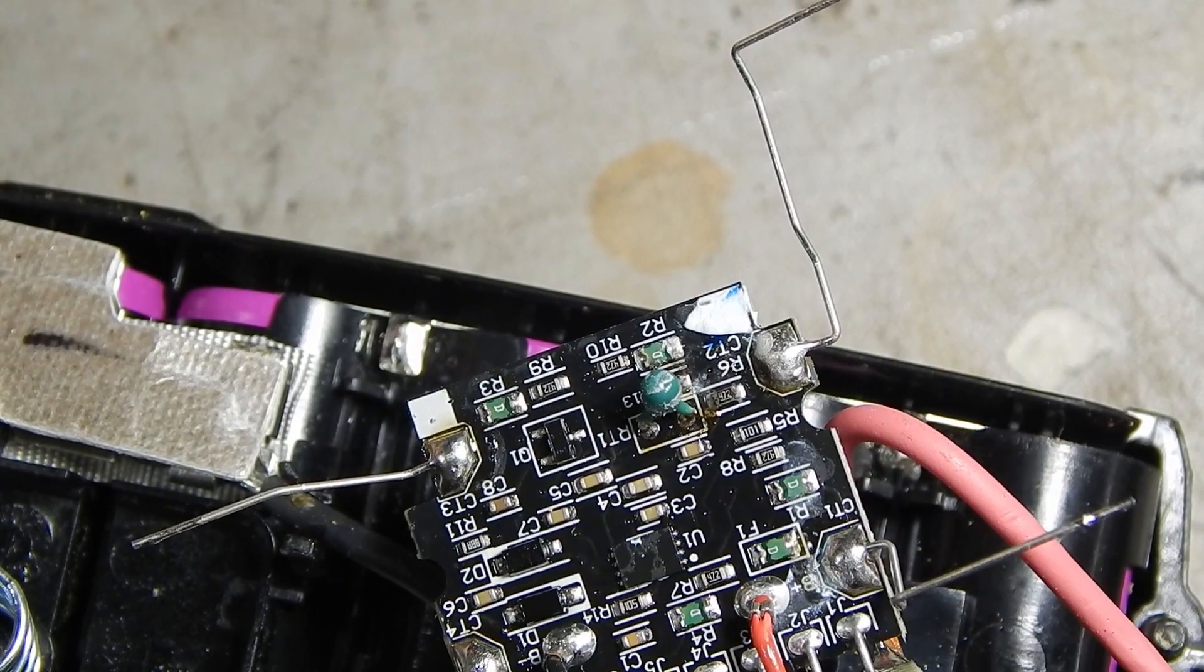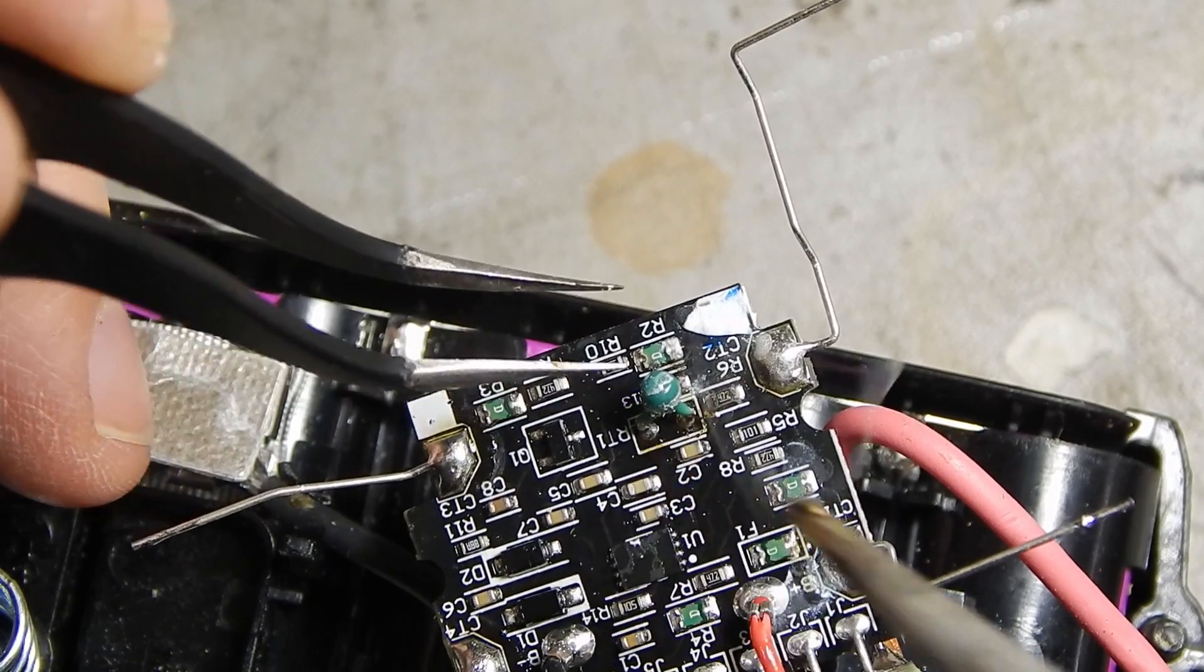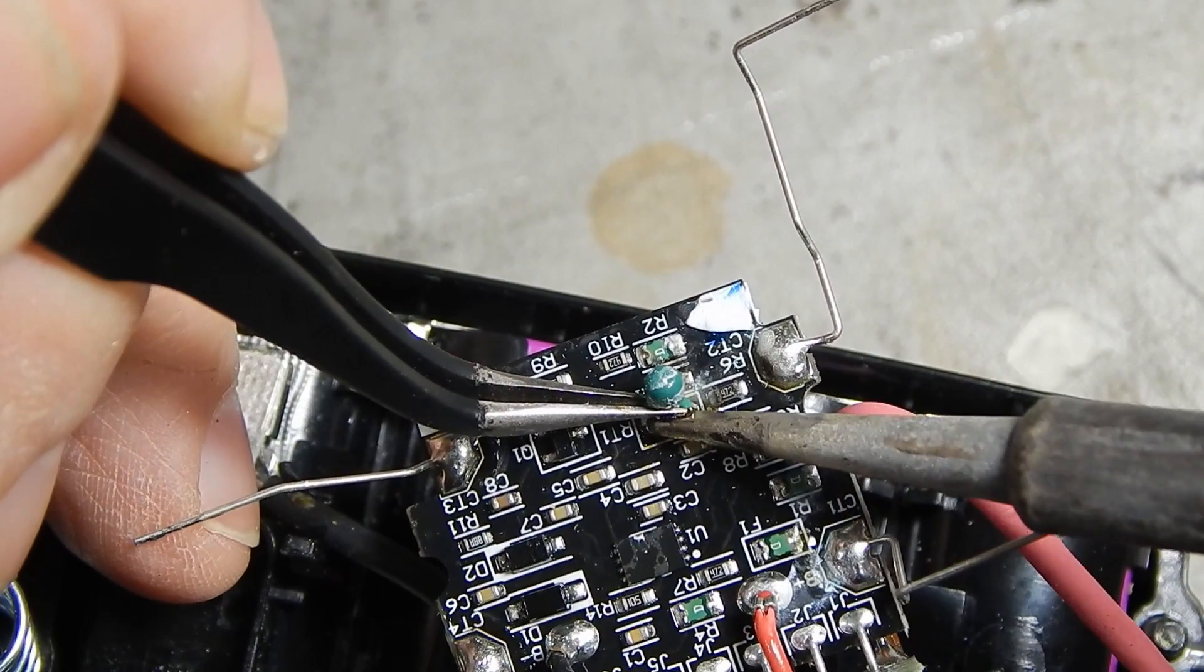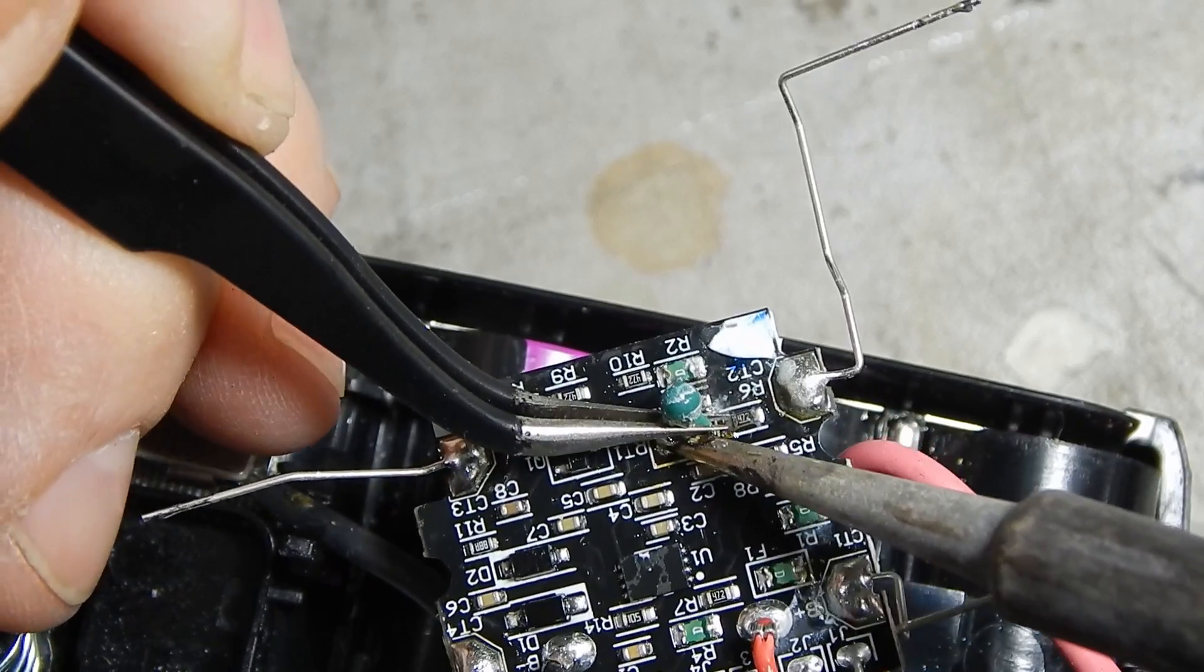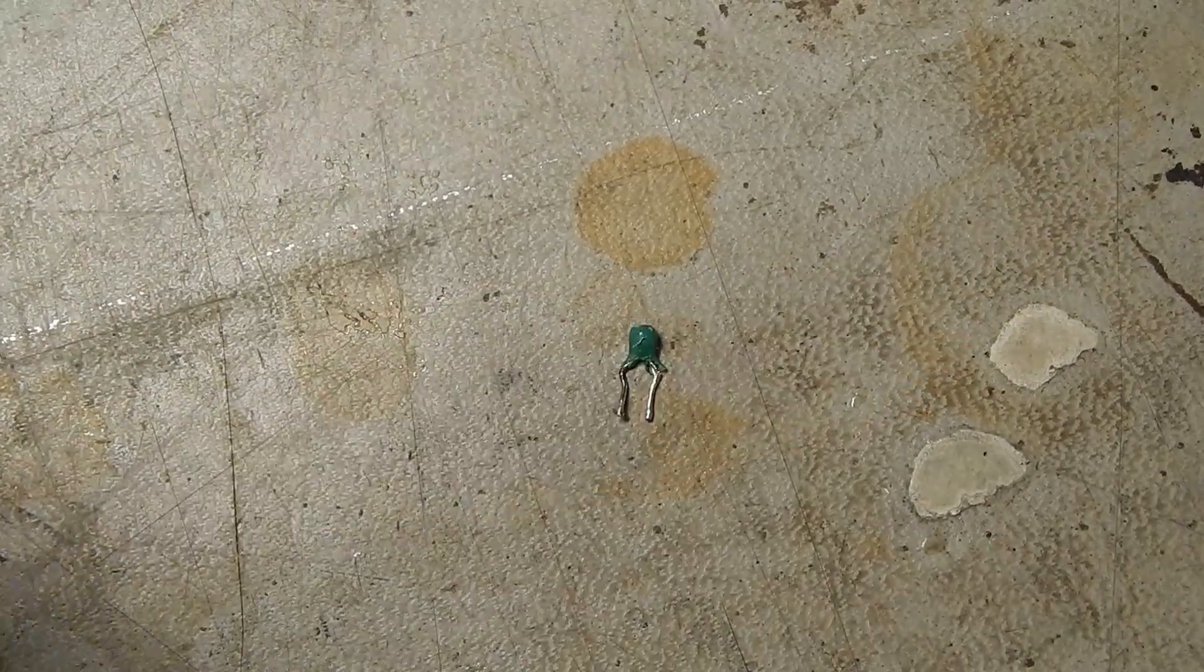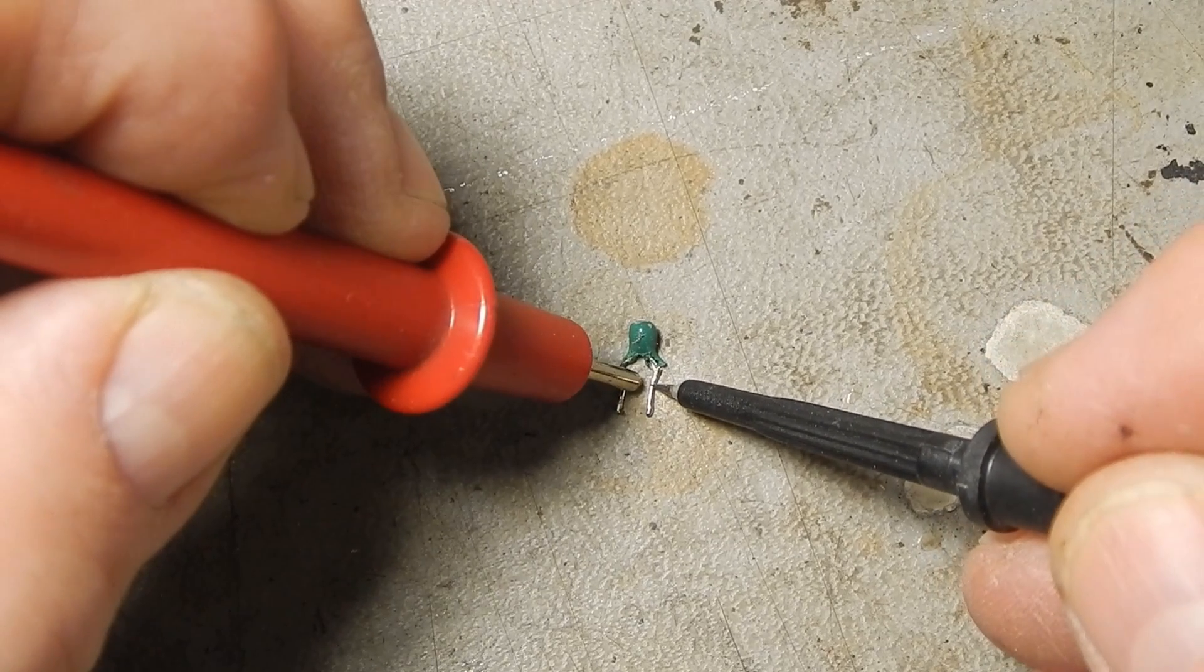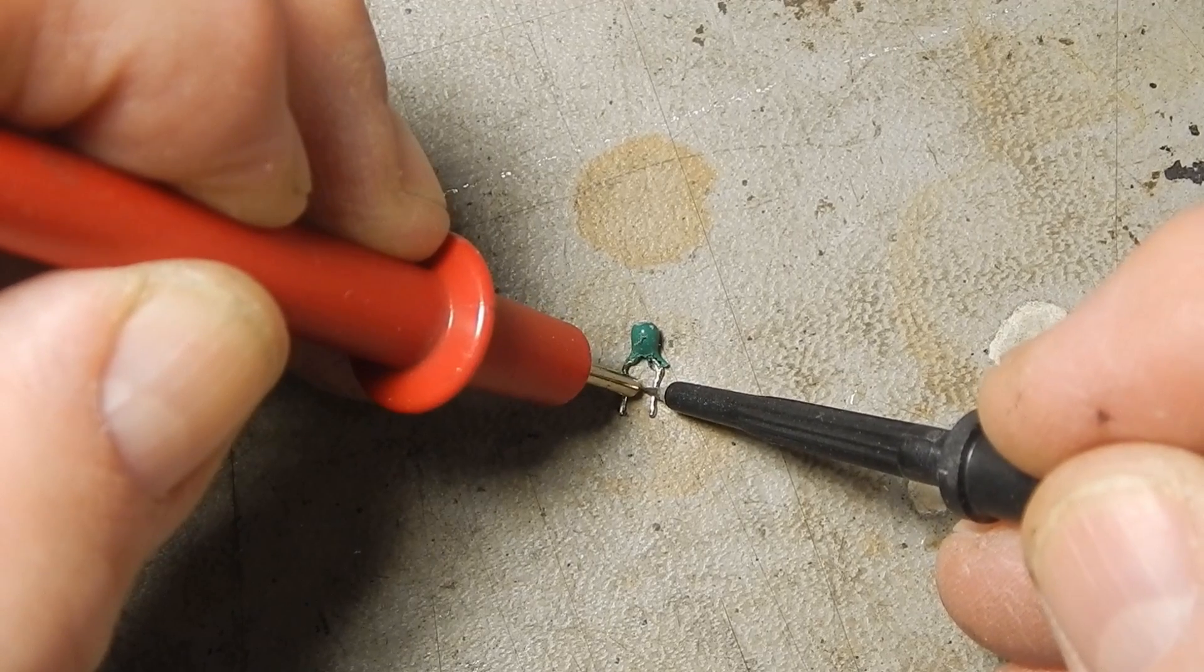Adding a little fresh solder often makes it easier to unsolder components. Now let's see if I can get both of those. There we go. There's our thermistor, and if I measure across it, I get 10k. So that thermistor is good.